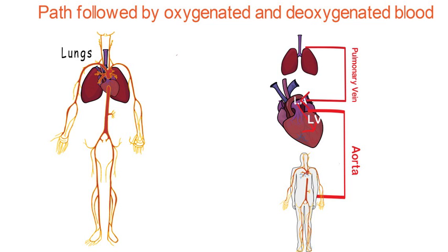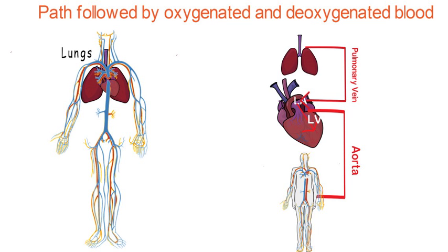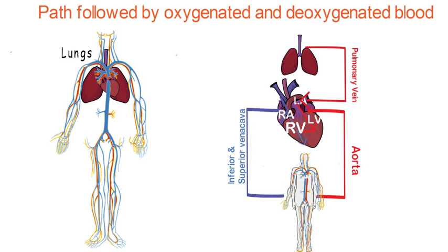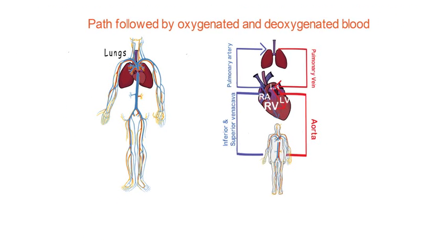Veins carry deoxygenated blood back to the heart. Blood enters the right auricle via inferior and superior vena cava, then travels to the right ventricle. As the ventricle contracts, blood goes out of the heart and enters the lungs via pulmonary artery. Here the entire process of gaseous exchange repeats and circulation continues. More detail about this we will learn in the circulatory system chapter.